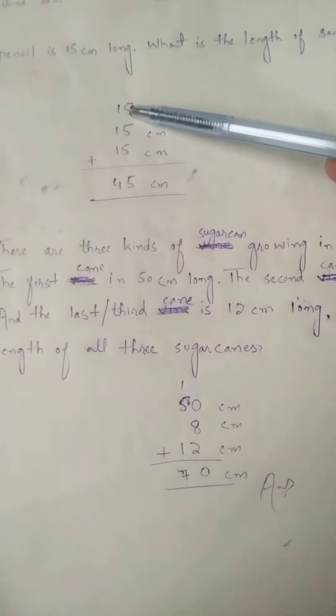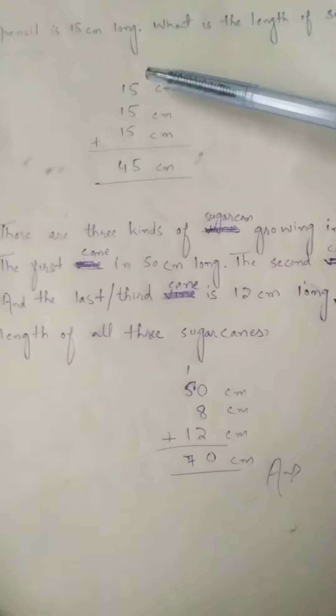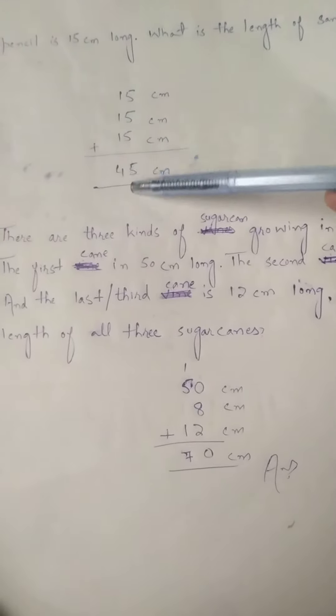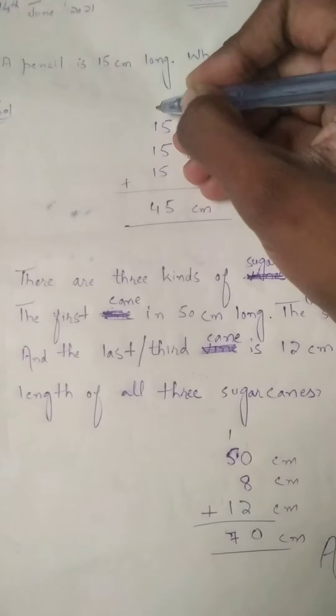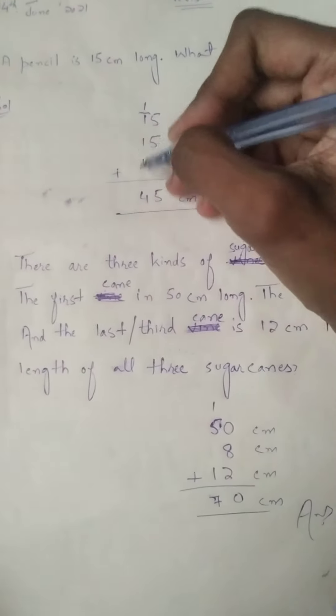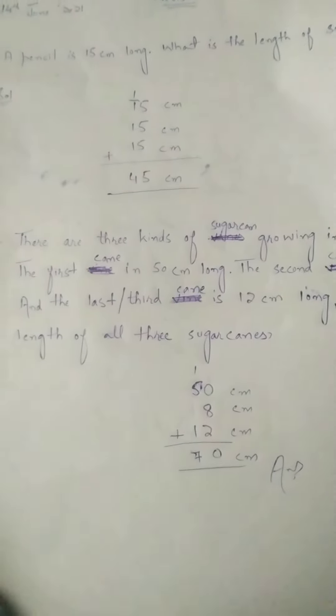We will add 15, 15, 15. Five plus five plus five equals fifteen, carry one. One plus one plus one equals three, plus one is four. So 45 centimeters is the total length of the given three pencils.